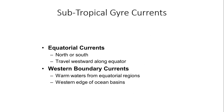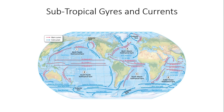Starting with the equatorial currents — these include both north and south equatorial currents. They generally travel westward along the equator, denoted in red coloring right in the vicinity of the equator, just north of it in the northern hemisphere and just south of it in the southern hemisphere.